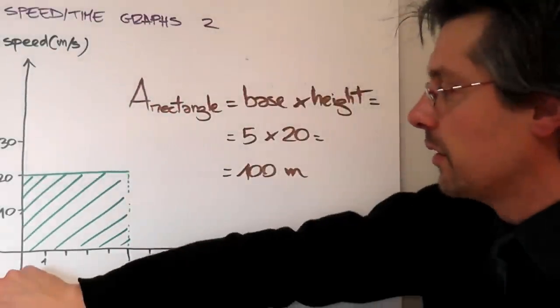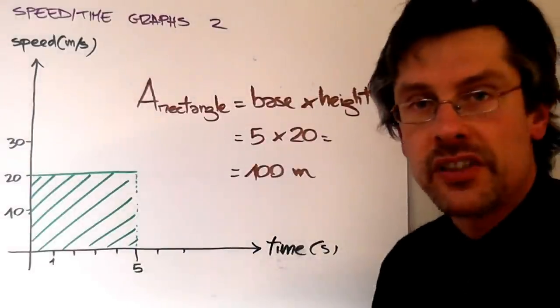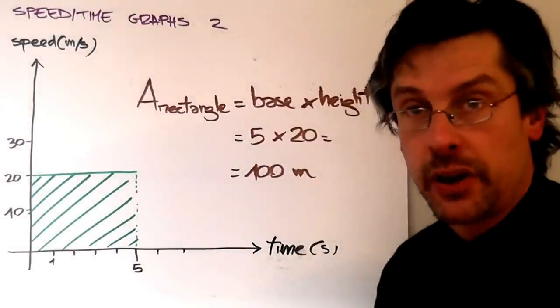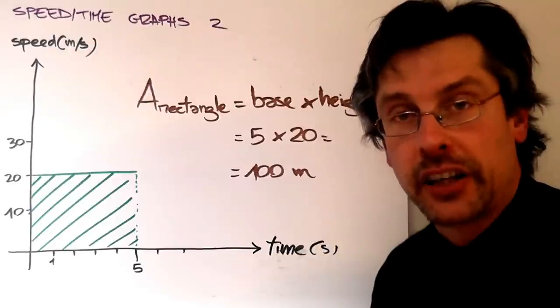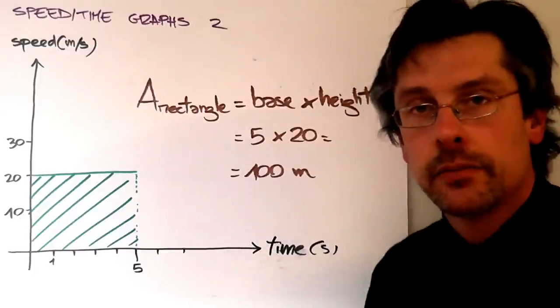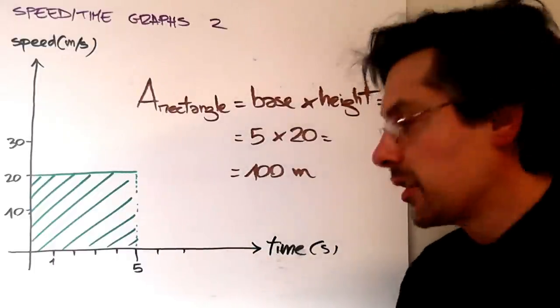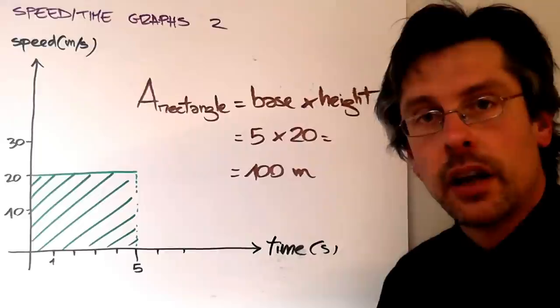But let's take a different view of this graph. This graph, actually this shape is a rectangle. Now we know pretty well how to find the area of a rectangle, and we know it's base times height. But what is the base of this rectangle? It's 5. And how much is the height? It's 20.